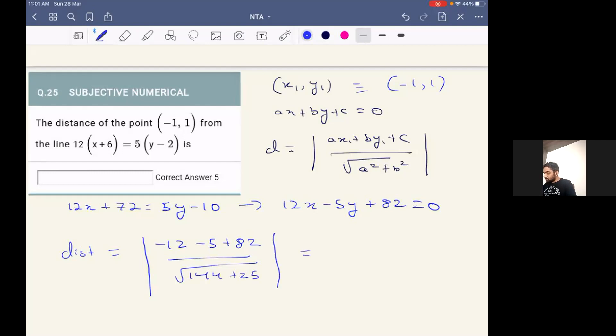So upon further simplification, we will get this value as minus 12 and minus 5, these two together will become minus 17. And if we add 82 in that, we will get it as 65.